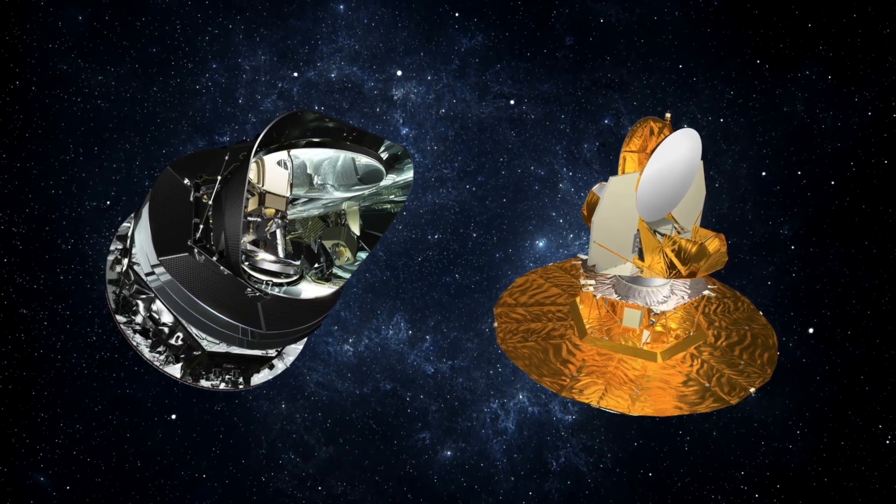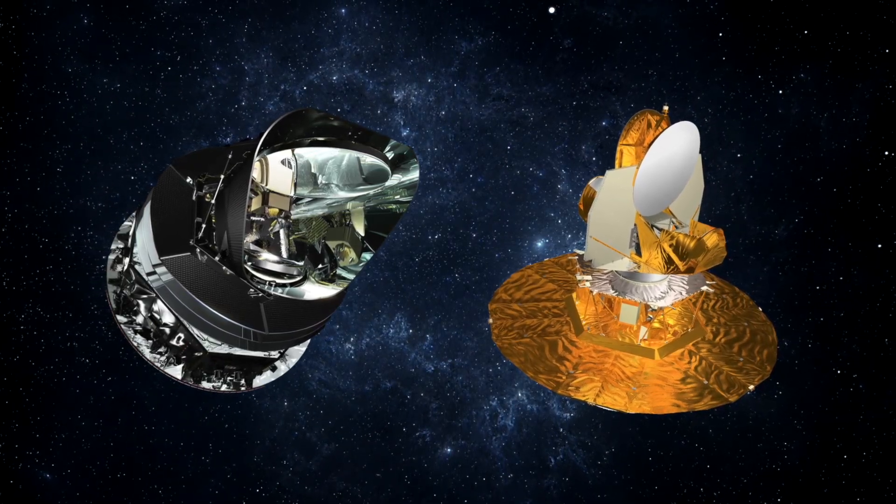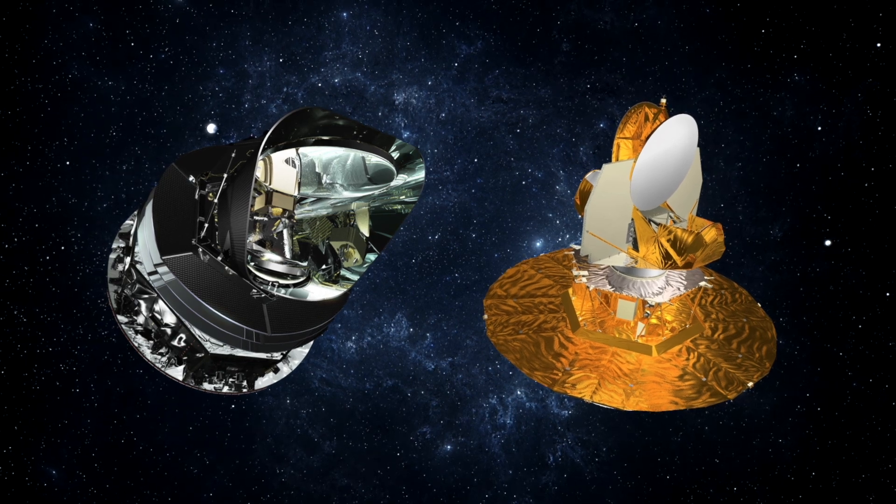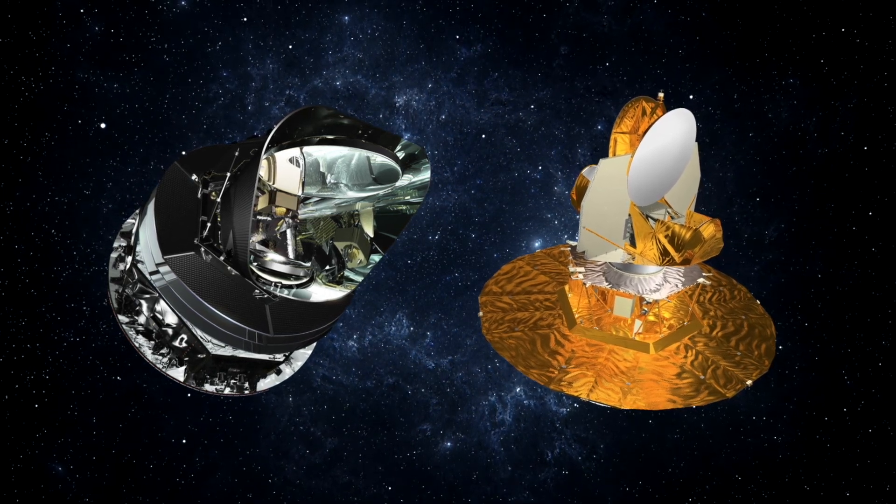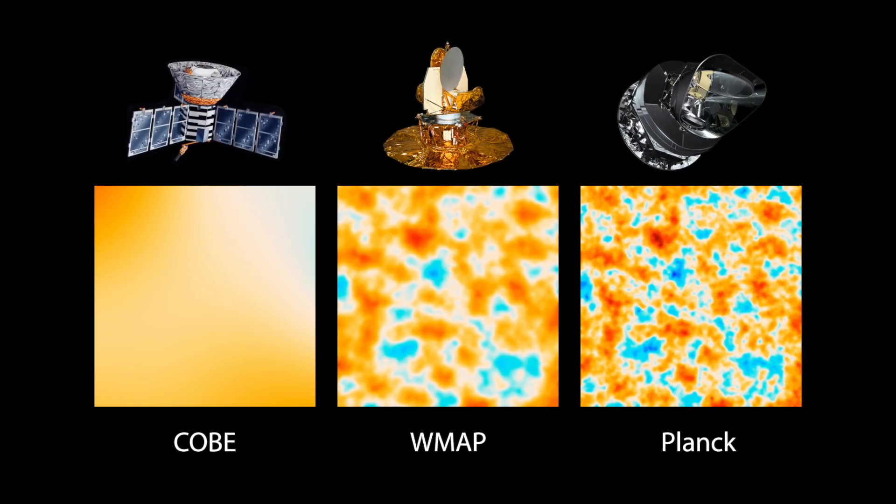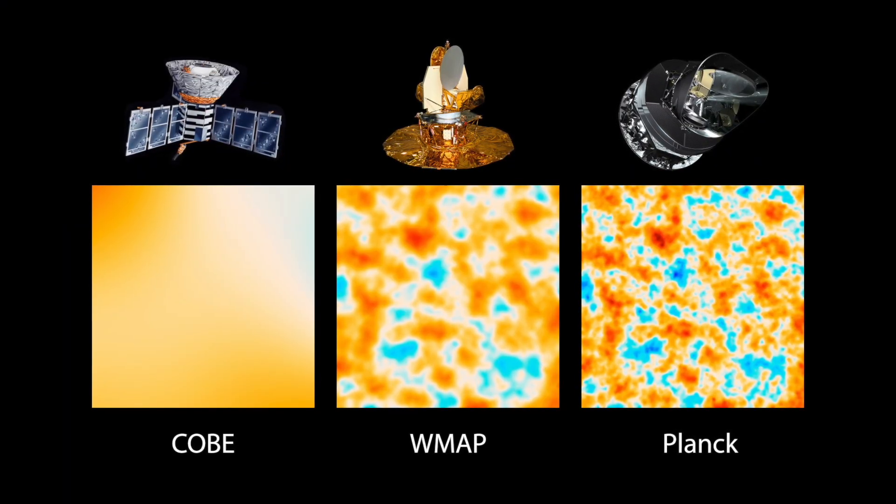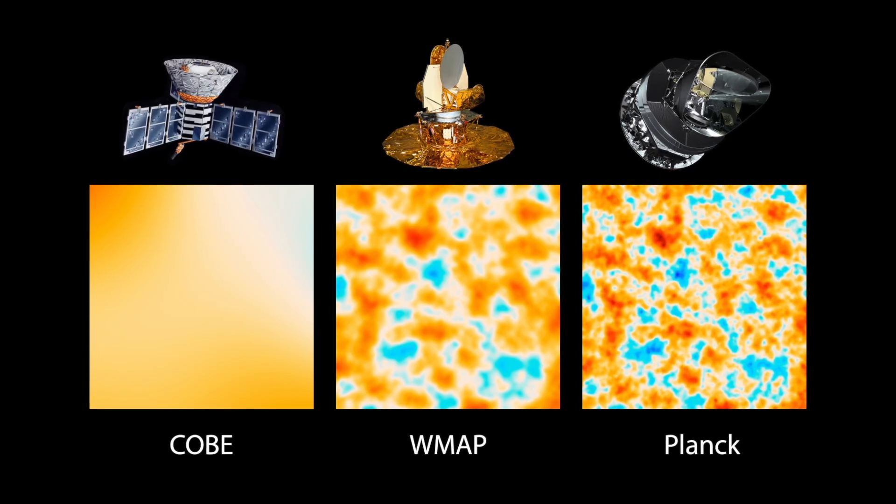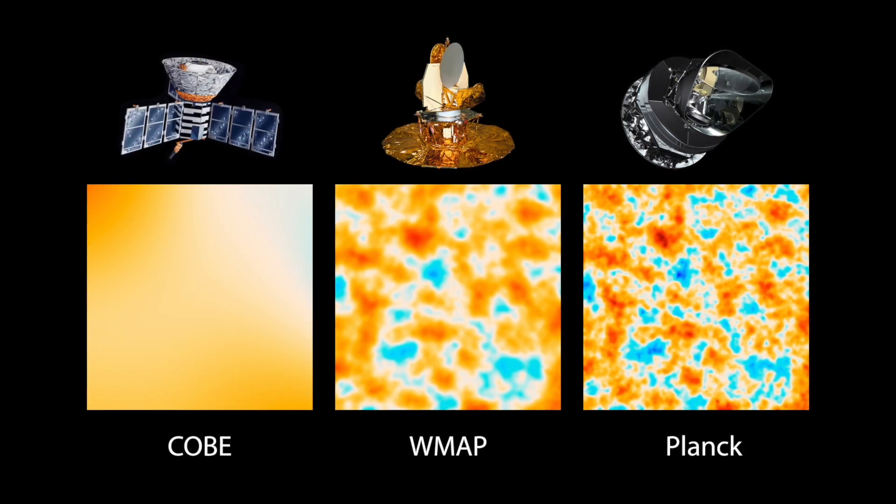However, there have been two other satellites launched in the intervening time, one called WMAP in 2001, and one called Planck, launched in 2009. As you can see here, each instrument was able to image the CMB with improved precision, and the Planck satellite gives the best image of the CMB.